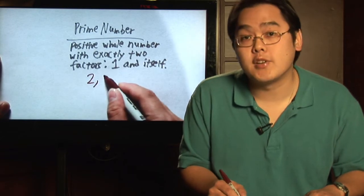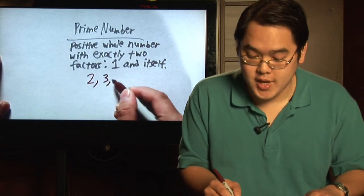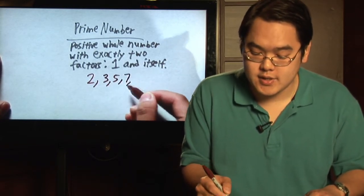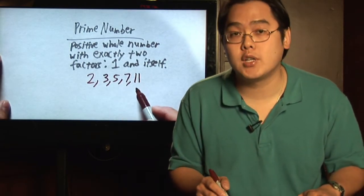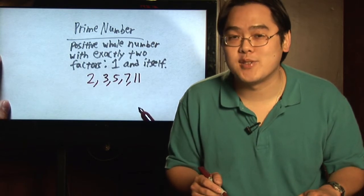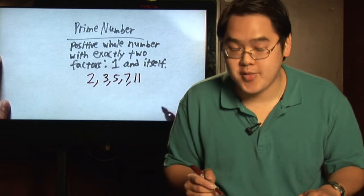You can also go down the list and see that three, five, seven, and eleven are other examples of prime numbers. If you look at the factors very closely, you'll see that the factors of those numbers are just one and themselves.